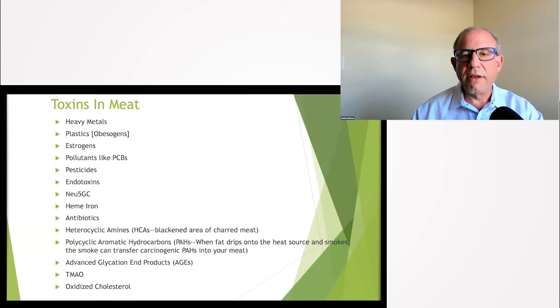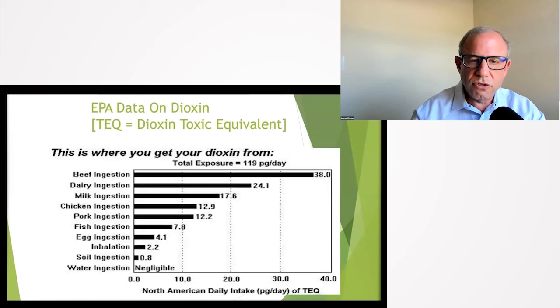It's when the fat drips onto a heat source and the smoke can transfer some of these carcinogenic PAHs into your meat. Advanced glycation end products, TMAO, and oxidized cholesterol. Just so you understand, this list is not inclusive - there are many other toxins found in animal products. Are there any toxins found in plants? Yes there are, but it turns out the higher up you go on the food chain there's more and more toxins.